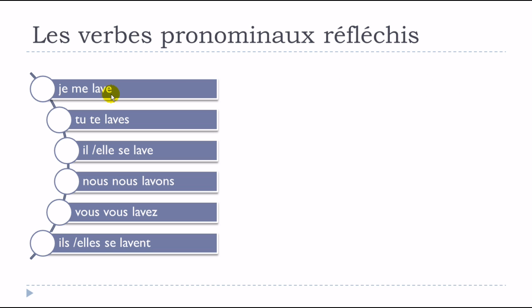Se laver is a regular -er verb, so it has the normal present tense endings. As a pronominal verb, you must add the reflexive pronoun: je me lave, tu te laves, il se lave, elle se lave, nous nous lavons, vous vous lavez, ils/elles se lavent. It's not that difficult — just remember to include the reflexive pronoun each time.